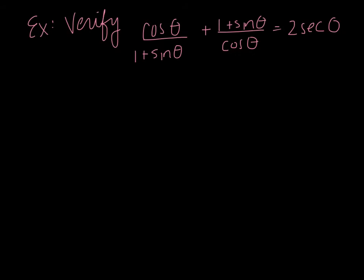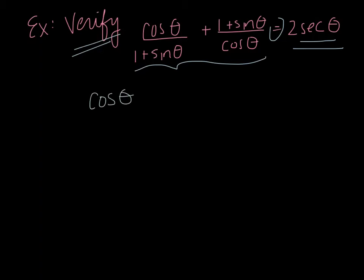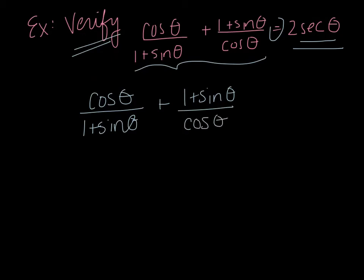Here's our last example — a little more complicated. It's a verify problem, so I choose a side. The left-hand side is clearly more complicated, so I'll work with it and try to end up with the right-hand side. I see I'm adding two fractions, so I want a common denominator. My common denominator is going to be cosine theta times 1 plus sine theta — I'm combining the denominators of both fractions.